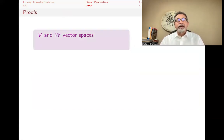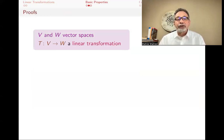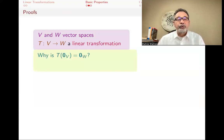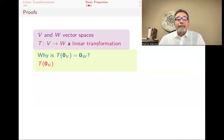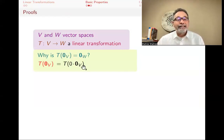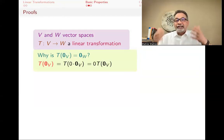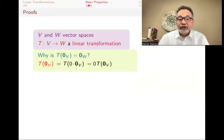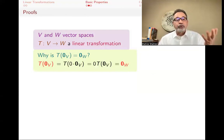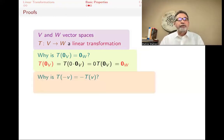So proofs. We have vector spaces and a linear transformation T from V to W. First, why does zero have to go to zero? Here's the reason. T(0_V) — well, 0_V is the same as the scalar zero times 0_V. Since this is a linear transformation, the scalar can come out: this becomes 0 · T(0_V). Zero times anything, T(0_V) — whatever it is, it's some element of W — and if you multiply it by the scalar zero, you get 0_W. So T(0_V) must equal 0_W.